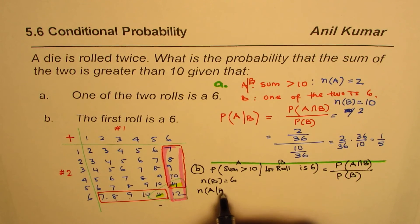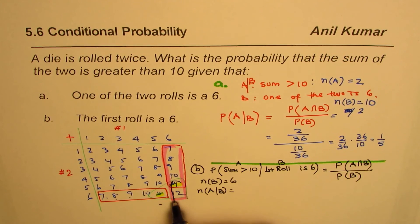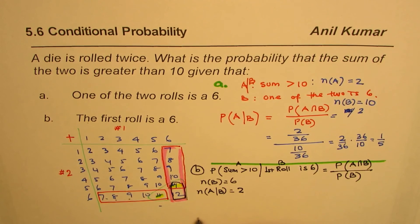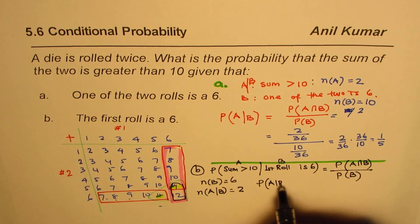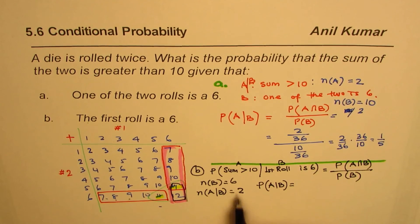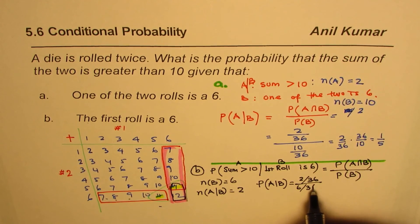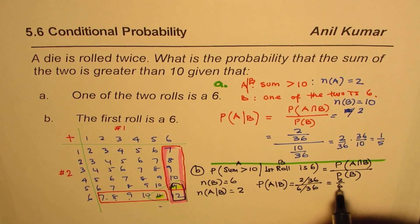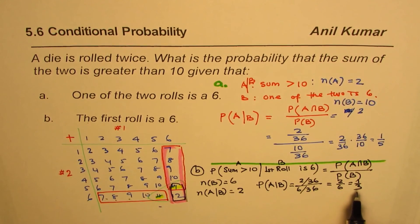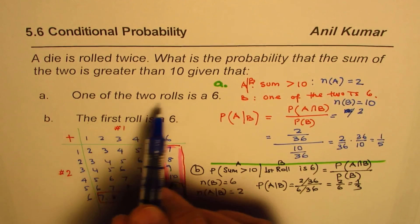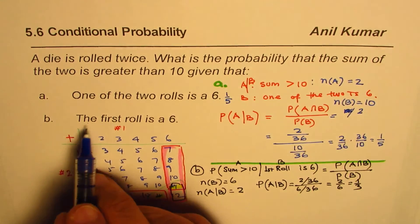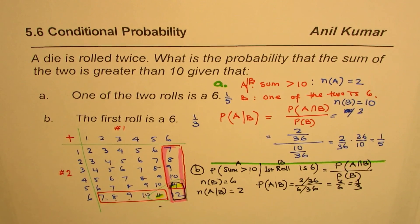With the first roll being a 6, there are 6 outcomes for B, so n(B) = 6. Within those, the sums greater than 10 are 11 and 12, giving n(A ∩ B) = 2. Therefore: P(A|B) = (2/36) / (6/36) = 2/6 = 1/3. So the probability for part B is 1/3. In summary: if one of the two rolls is a 6, the answer is 1/5; if the first roll is a 6, the answer is 1/3.